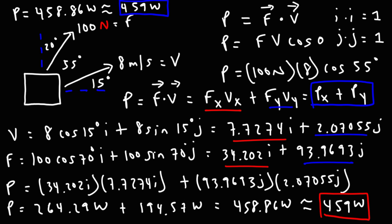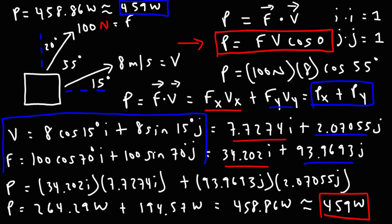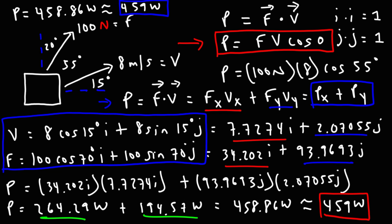That's how you calculate the instantaneous power being delivered to an object by a force when given the force vector and the velocity vector — two ways of doing it. If you know the magnitudes and the angle between the vectors, using P equals F times v times cosine theta is the fastest method. If the vectors are given in component form with î, ĵ, and k̂ for three-dimensional vectors, you can multiply the corresponding components and add them up. That's it for this video.